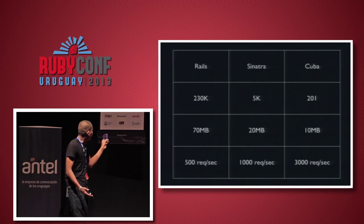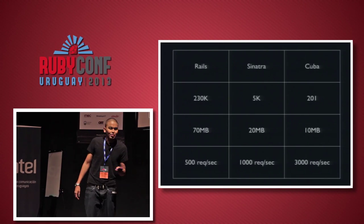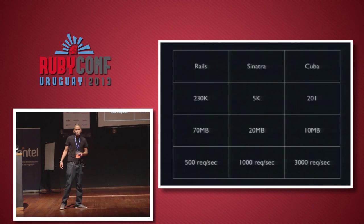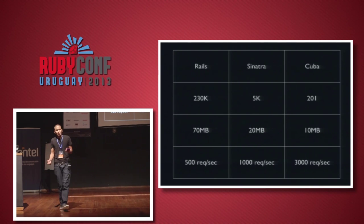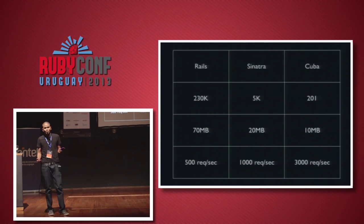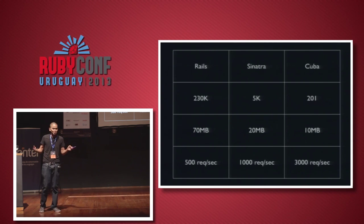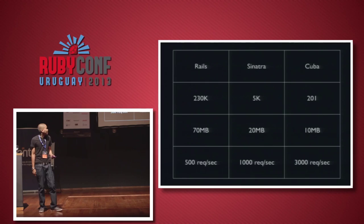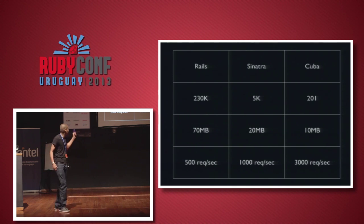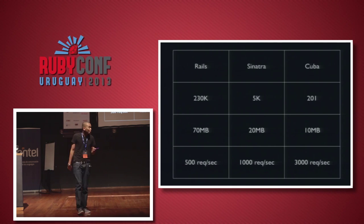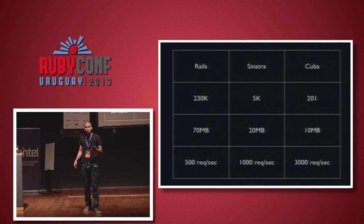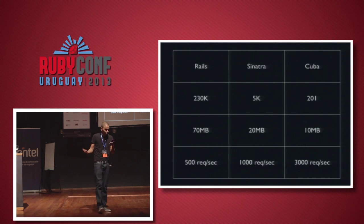For a different comparison, you have around 230,000 lines of Rails code — the previous presenter was showing how he was debugging URL helpers or link helpers. That's just a lot of code. For Sinatra, you get 5,000. And for Cuba, we have around 200 lines of code.